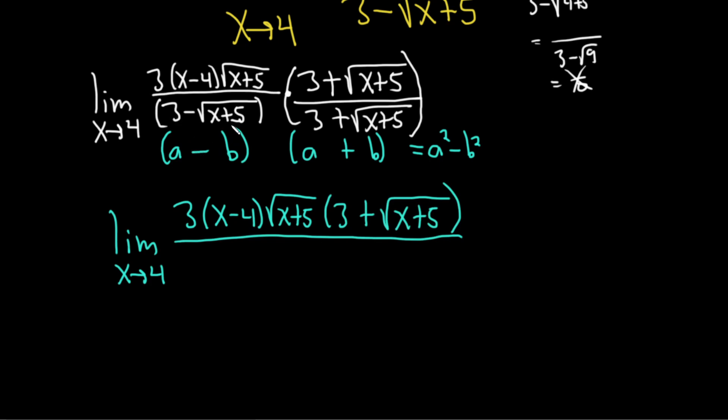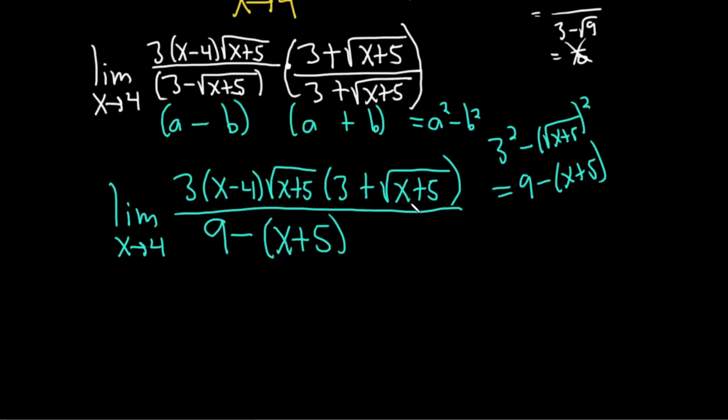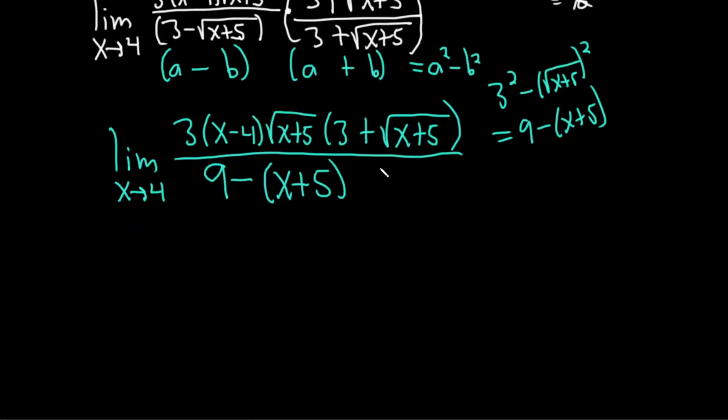So a here is 3, and b is the square root of x plus 5. So using this formula, we'll square the 3, so 9, minus, and now we're going to square the square root of x plus 5. That's just going to be x plus 5. But it's really important to have parentheses here like this, because when you use the formula, it'll be 3 squared minus the square root of x plus 5 squared. That's 9 minus x plus 5. You see, so the parentheses are there. All right, let's keep going and see what happens.